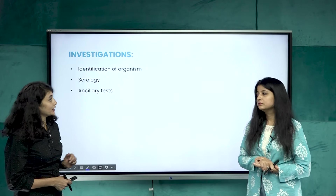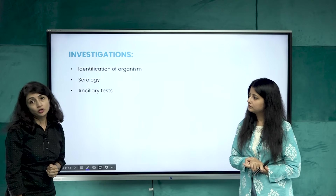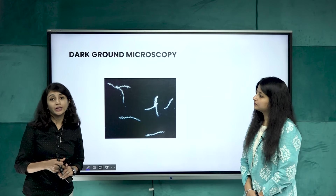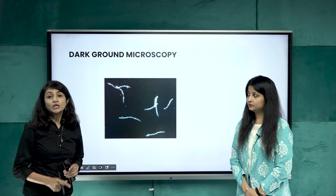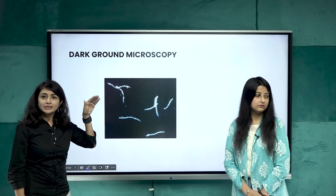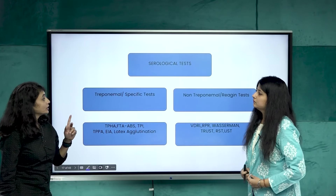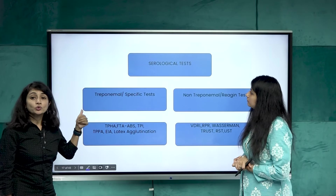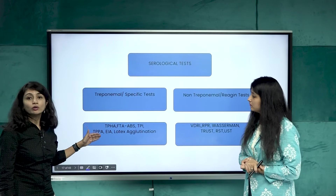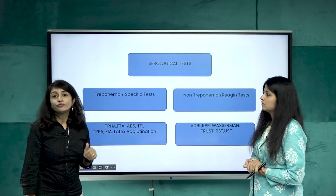Investigations for syphilis include identification of the organism, serological tests, and ancillary tests. Dark ground microscopy is done from a chancre, lymph node, or condyloma lata — organisms appear as fluorescent, slender, wavy forms. Serological tests are used in secondary and sometimes primary phase. Treponemal or specific tests include TPHA and FTA-ABS — they stay positive throughout life and do not help in monitoring treatment. Non-treponemal tests include VDRL and RPR, which are more sensitive and readily available.